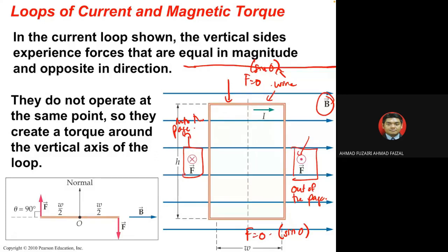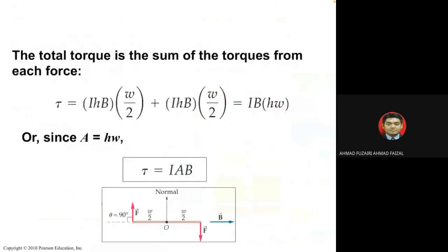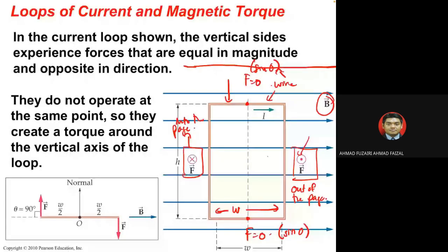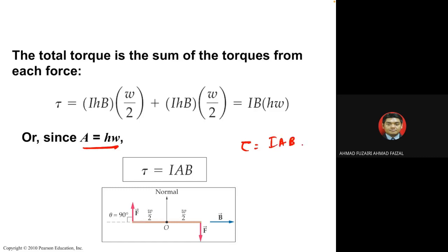Because one side has force out of the page and the other into the page, the loop can rotate — like a pivot. The total torque involves the width and length of the loop: length times width gives area A, so the torque τ equals iAB.